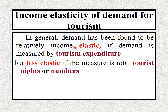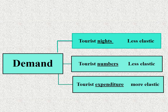Demand has been found to be relatively income elastic if it is measured by tourism expenditure; less elastic if the measure is total tourist nights or numbers. يعني كلمة demand ممكن تُعبَّر عنها بثلاث أشكال: tourist nights يعني عدد الليالي السياحية، numbers يعني عدد السياح، وexpenditure يعني الدولارات اللي صرفها السياح.